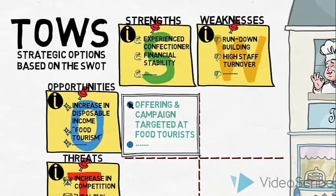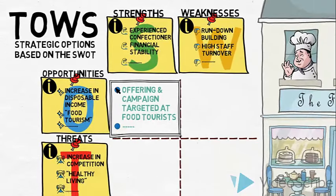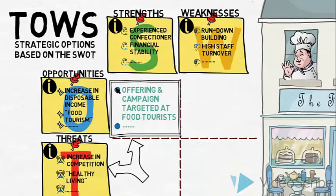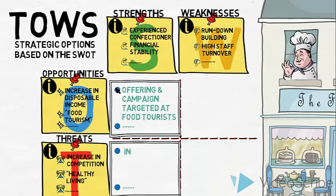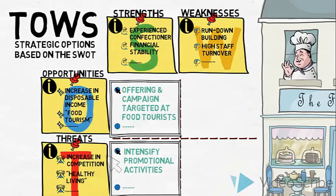Now let us see what strategic options our strengths and threats could generate. One option could be to intensify promotional activities. Our strong financial situation should provide us with the resources needed to face the threat of increasing competition.